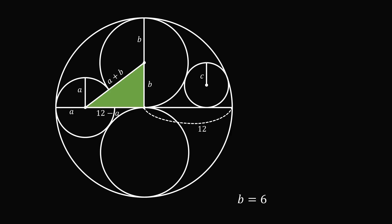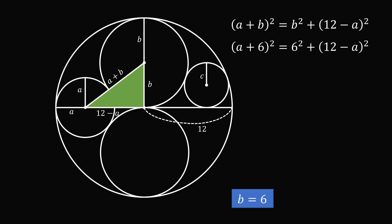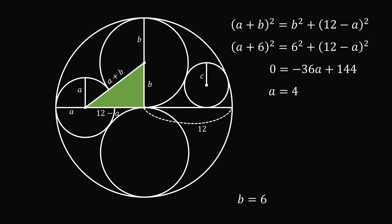Since we have a right triangle, we have the square of (a plus b) is equal to b squared plus the square of (12 minus a). Substituting in that b is equal to 6, we can simplify this equation, and we can work out that a is equal to 4.